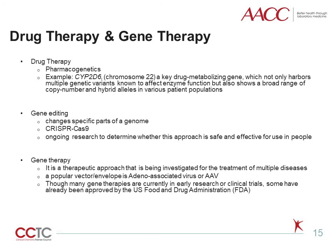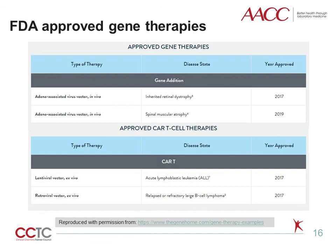Though many gene therapies are currently in early research or clinical trials, some have already been approved by the US Food and Drug Administration, or FDA. Gene therapy research began over 40 years ago, and our understanding combined with technological advances has greatly advanced the field. In 2017, after extensive research in labs and human clinical trials around the world, the first gene therapies were approved by the FDA for use in the United States. As of January 2020, the FDA has approved two gene therapy products and two gene-based cellular immunotherapies. To date, the FDA has received more than 900 applications to investigate gene therapy in clinical trials. This is part of a new age of medicine whose foundations lay in gene dosage effects.